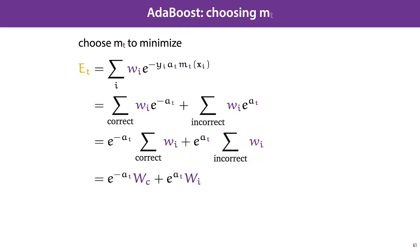We can take these exponentials outside of the sum, which leaves us with two terms: e to the power of minus AT times the total weight of the instances that were correctly classified by our model MT, and e to the power of AT times the sum weight of the instances that were incorrectly classified by model MT. To simplify the notation, we introduce variables WC and WI to represent these two sums over the weights.